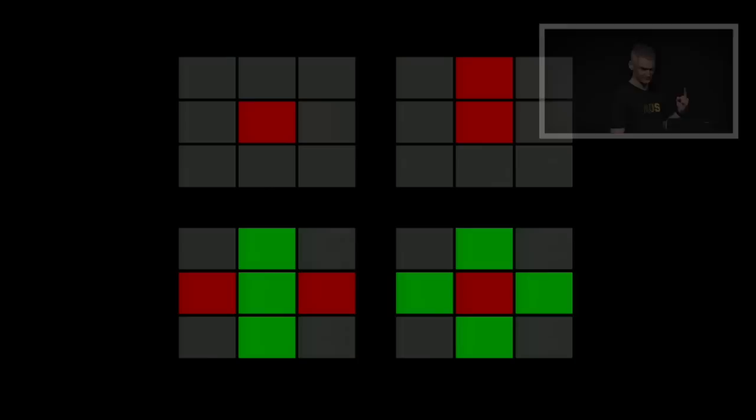The rules go something like this: If a cell has zero or one neighbor, it's going to die of loneliness. If a cell is alive and has two or three neighbors, it's going to stay alive. If a cell is dead and it's got exactly three neighbors, it comes to life. If a cell has four or more neighbors, it dies from overcrowding.